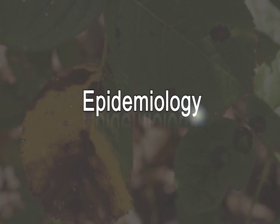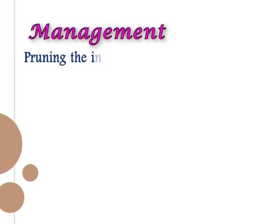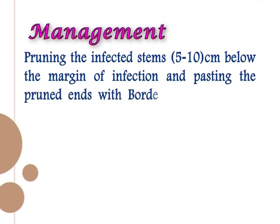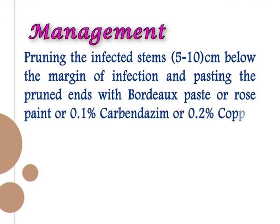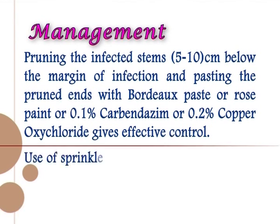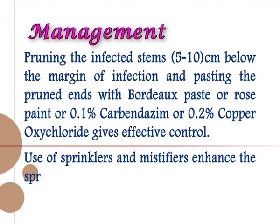Epidemiology: the fungus persists in dead twigs and the stalks of the withered blooms. Management: pruning the infected stems 5 to 10 cm below the margin of infection and pasting the pruned ends with Bordeaux paste, rose paint, 0.1% carbendazim, or 0.2% copper oxychloride gives effective control. Use of sprinklers and misty fires enhance the spread of the disease.